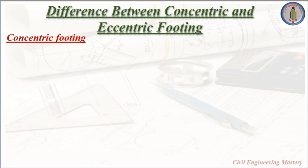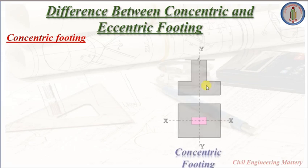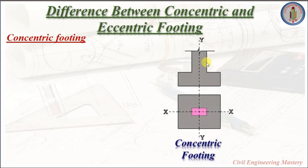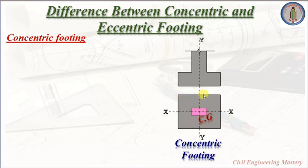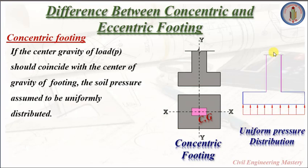First, let us discuss about the concentric footing. The basic concept is that whatever load comes from the column will transfer to the area of the footing. The column load should always act at the center of the footing. It is very important to note that the center of gravity of the column load should always coincide with the center of gravity of the footing. Here, the column load is acting at the center of the footing, so the pressure distribution below the footing will be uniform.